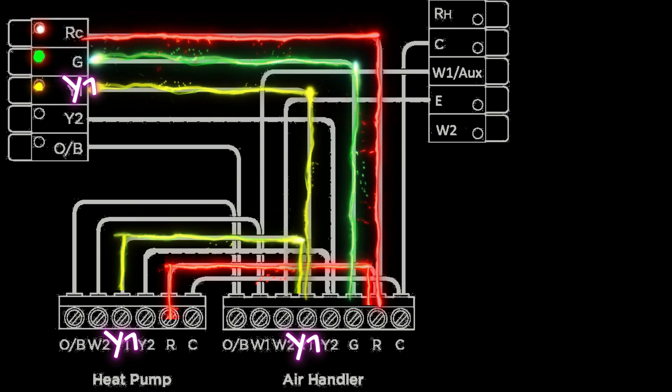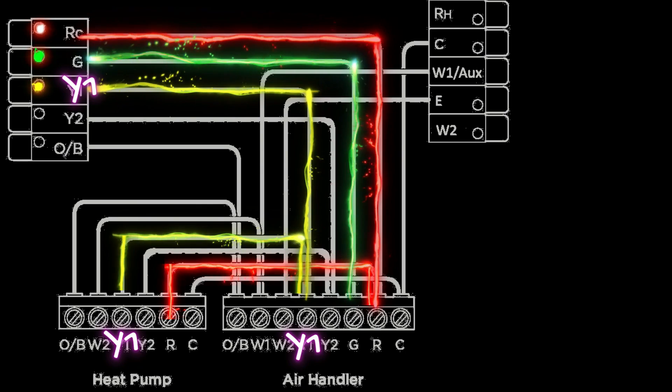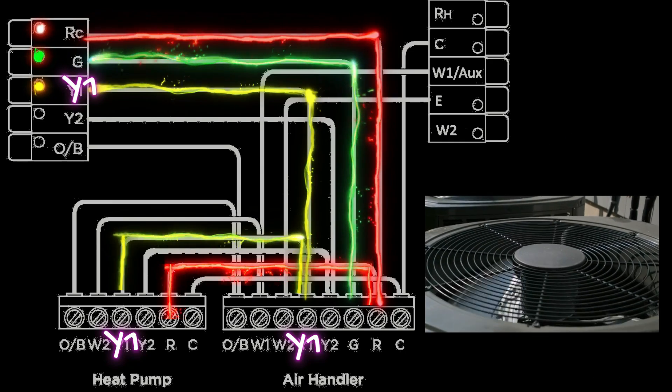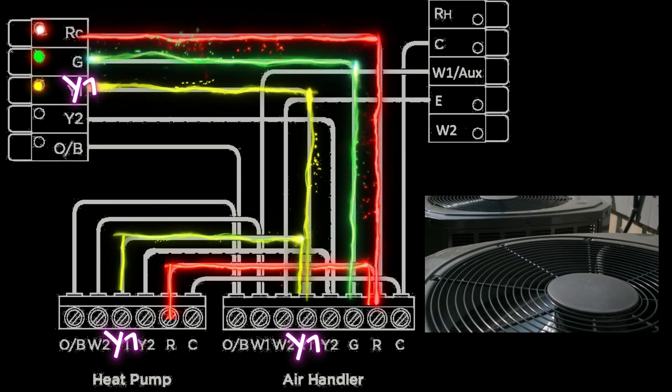And eventually when it makes it through those two switches it hits the contactor, the contactor pulls in, the outdoor unit can now be powered and our compressor and condenser fan motor turn on.